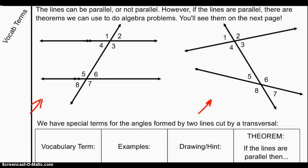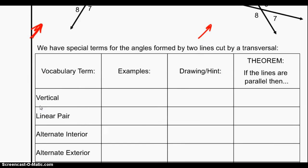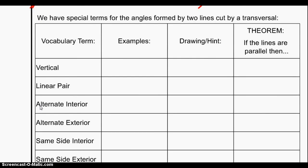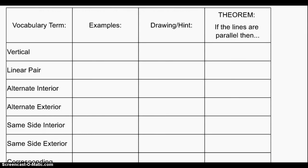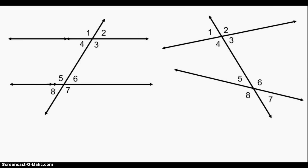But before we get there, we need to learn some special vocabulary terms. We're going to use these two figures to fill in the vocabulary terms on the bottom of your page. The first two vocabulary terms we've already learned before: vertical angles and linear pair. Let's look at our diagram.